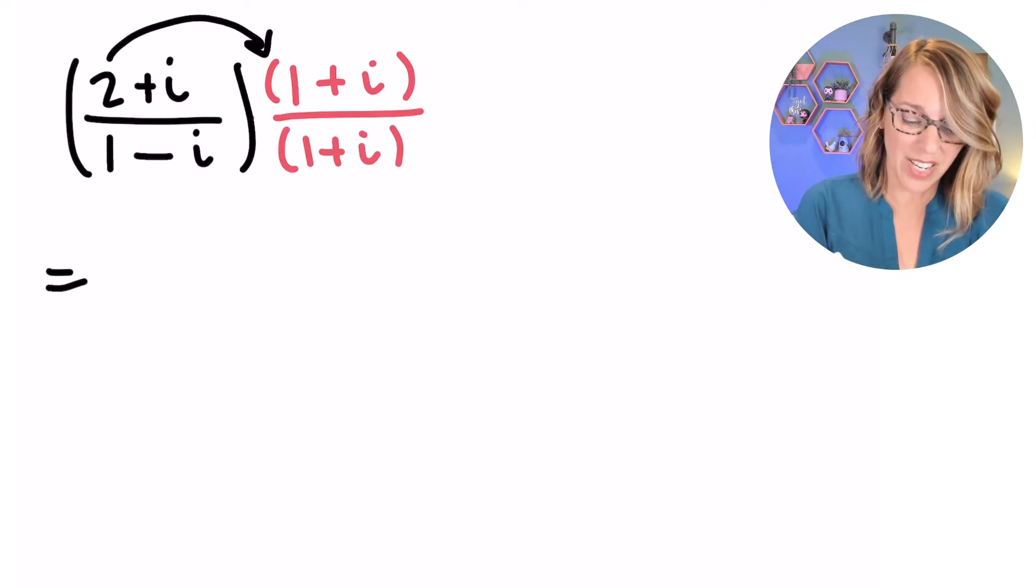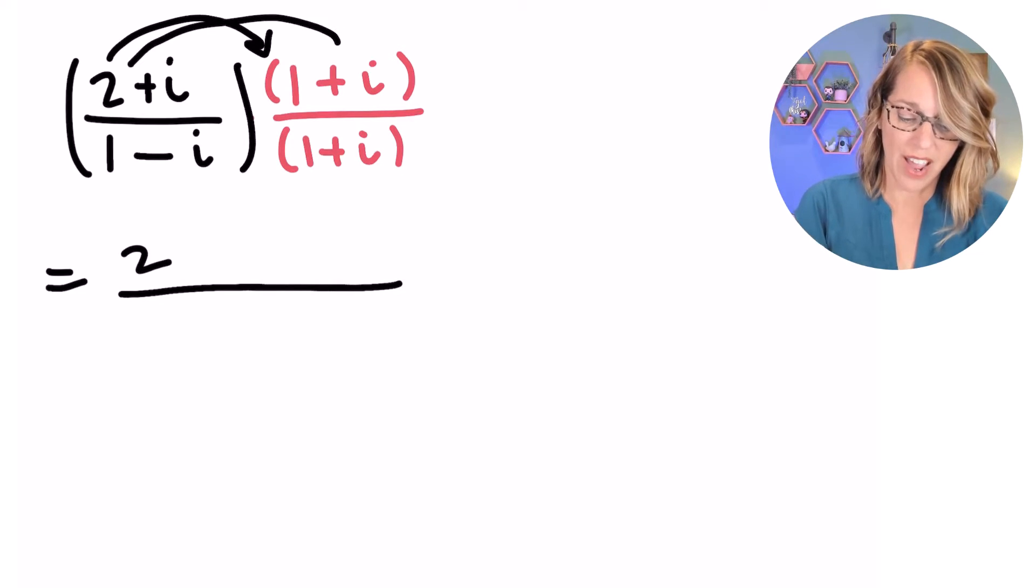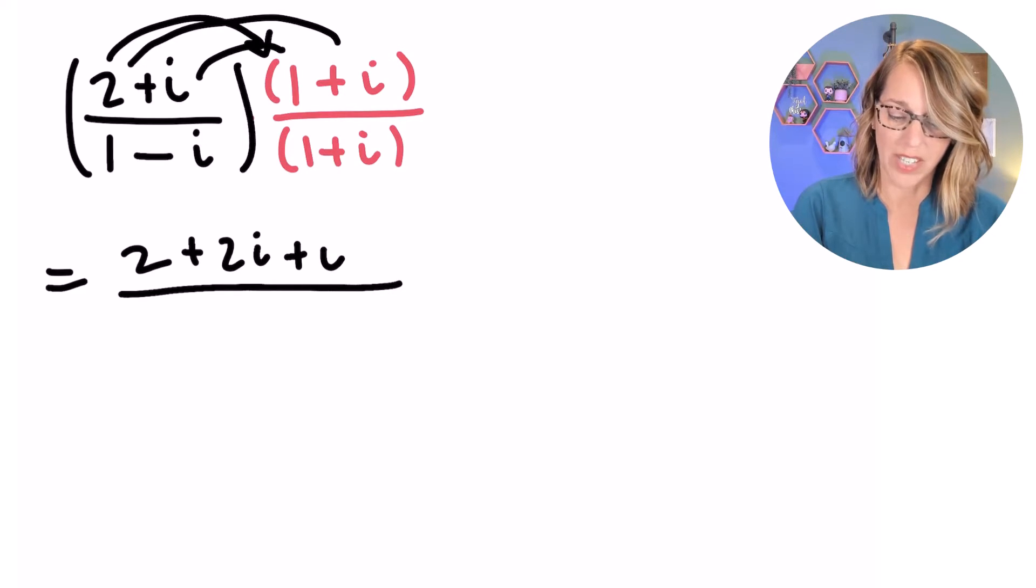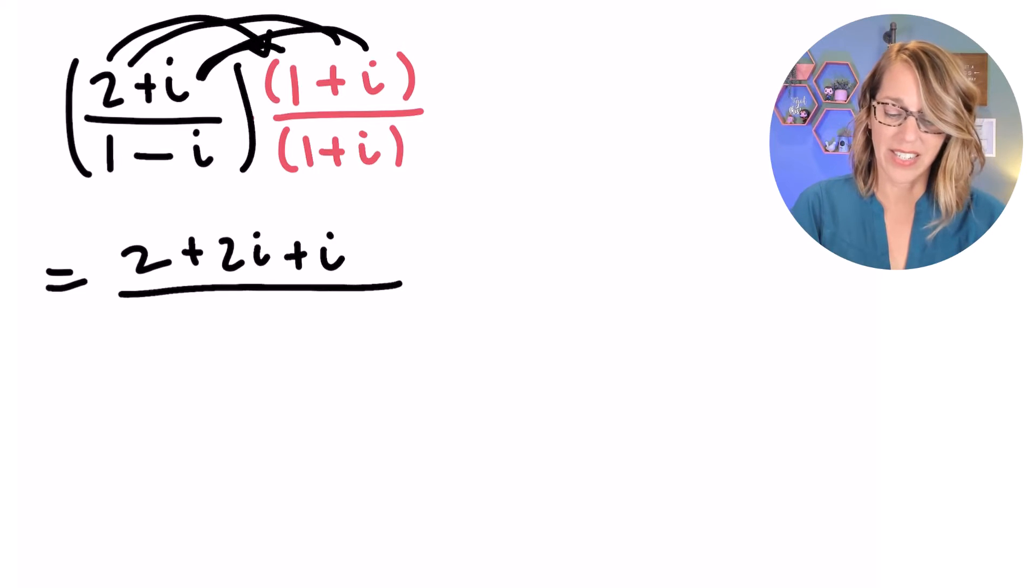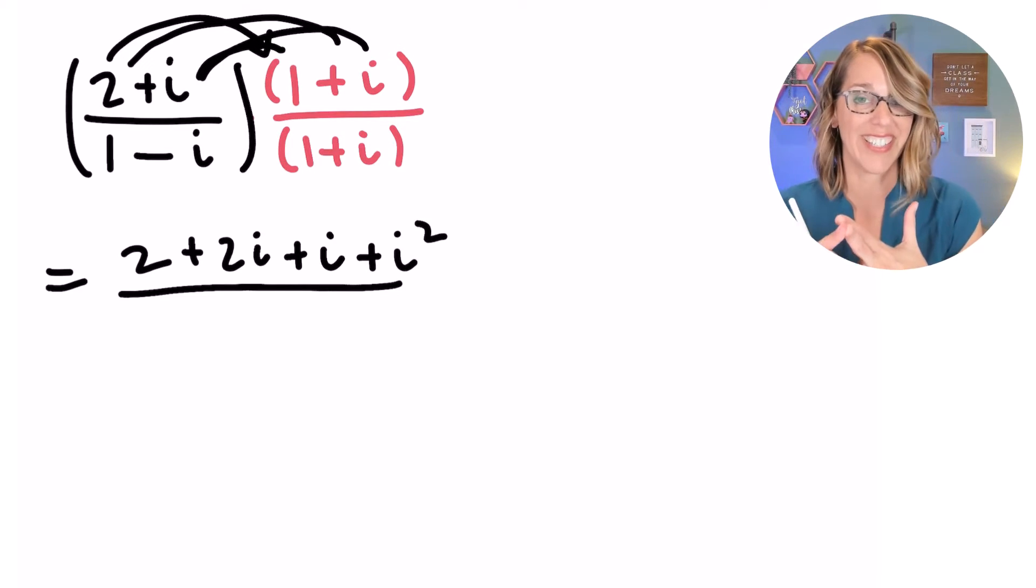2 times 1 is equal to 2, and then 2 times I is plus 2I. In the middle, I've got I times 1, so plus another I. And then on the end, I've got plus I squared. We're going to clean that up in just a second.